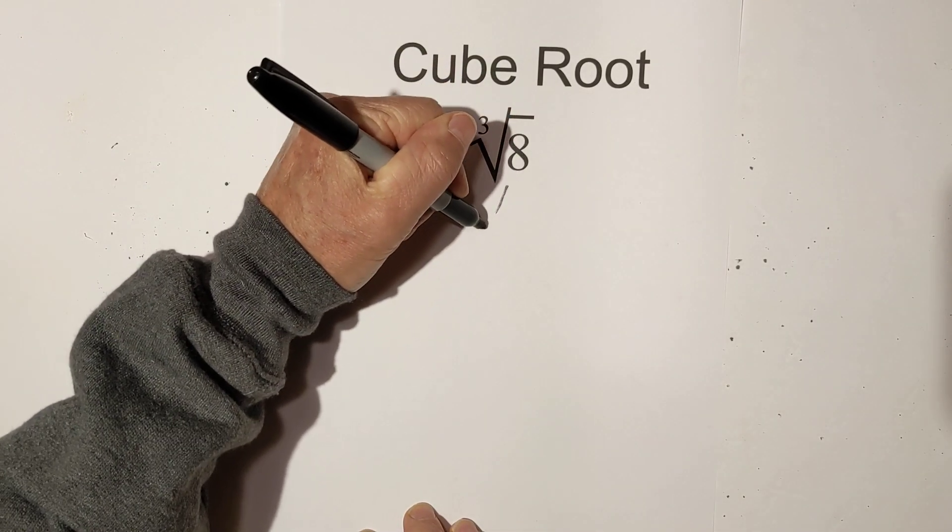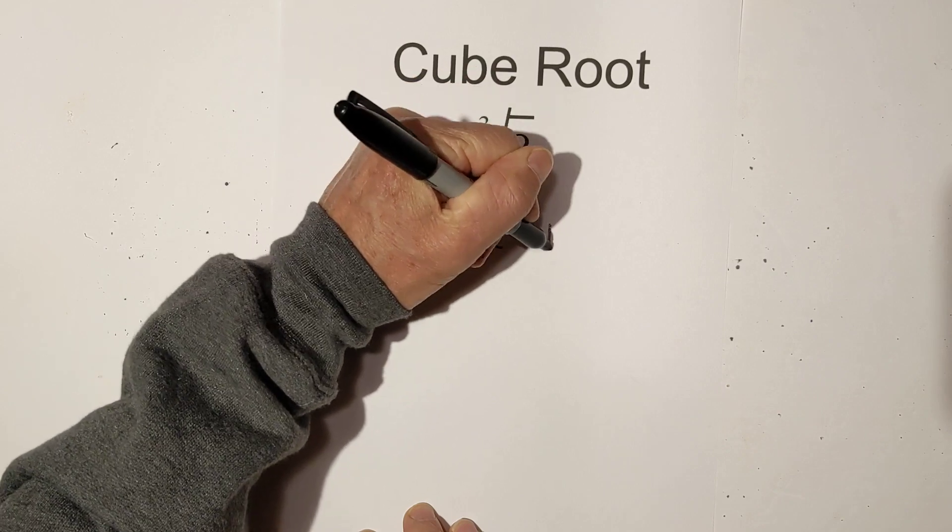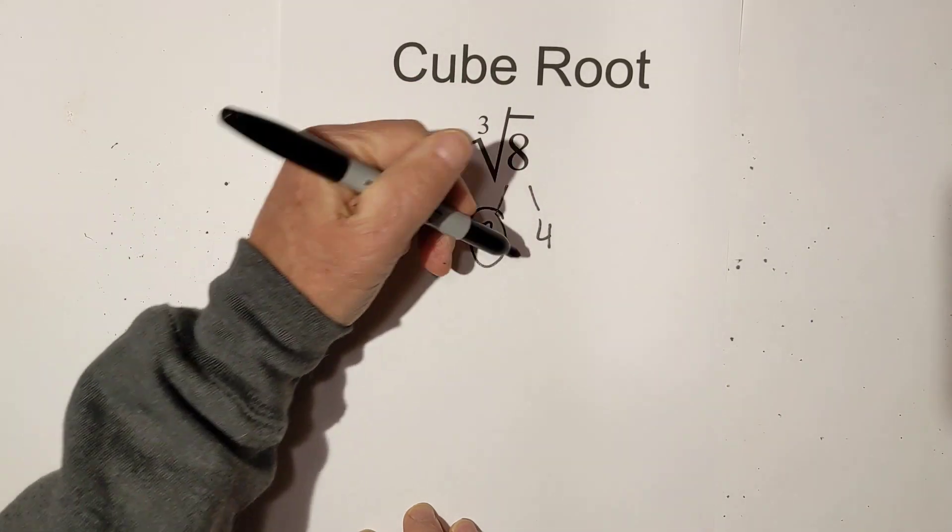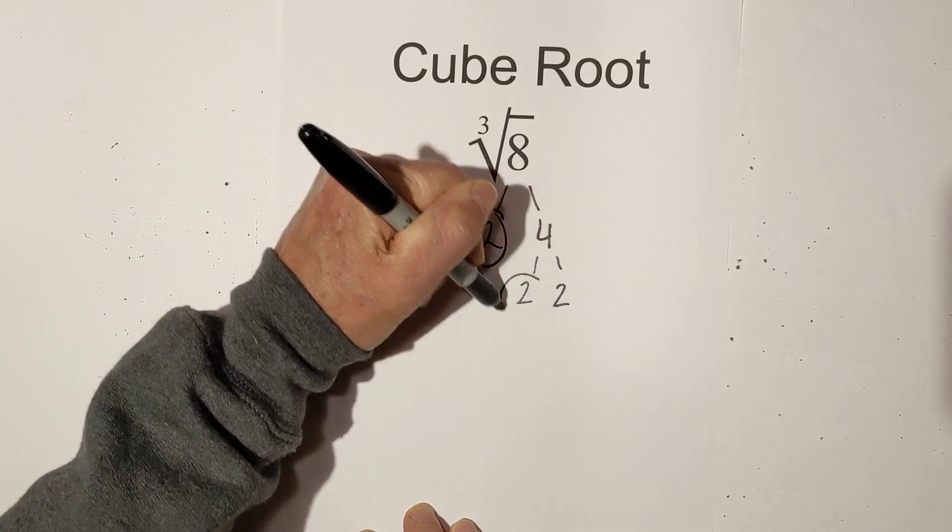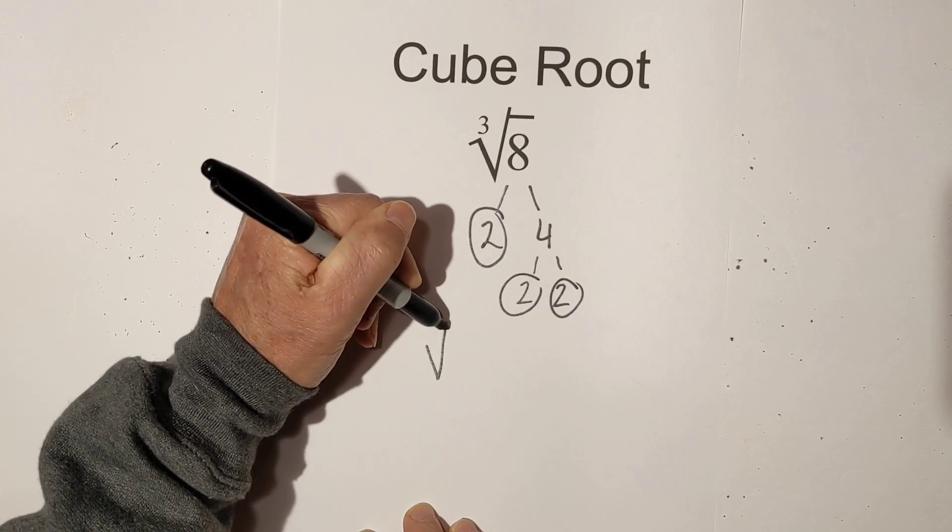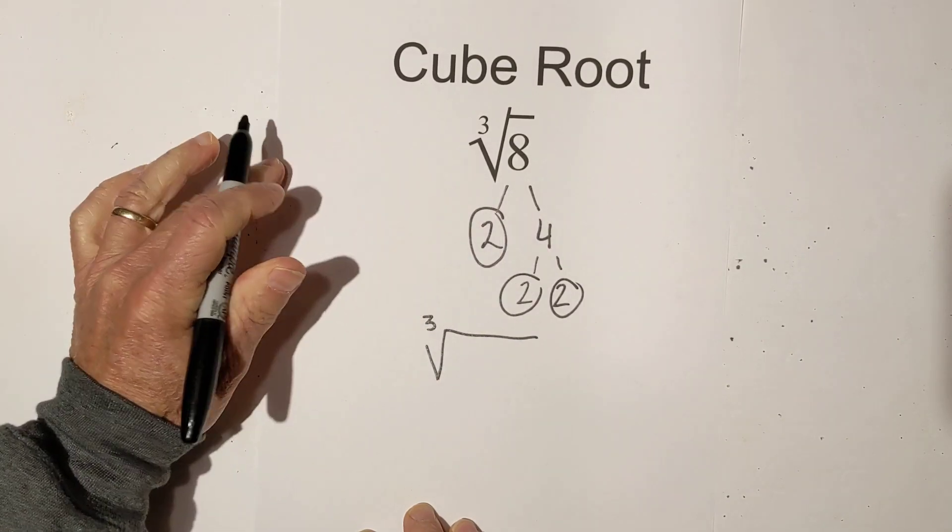I like to use a factor tree in order to do that. So I'm going to start with 2 times 4, circle the 2 because it's prime, and then 2 times 2, circle both 2's because they're prime. Now what you can do is place it under the cube root symbol.